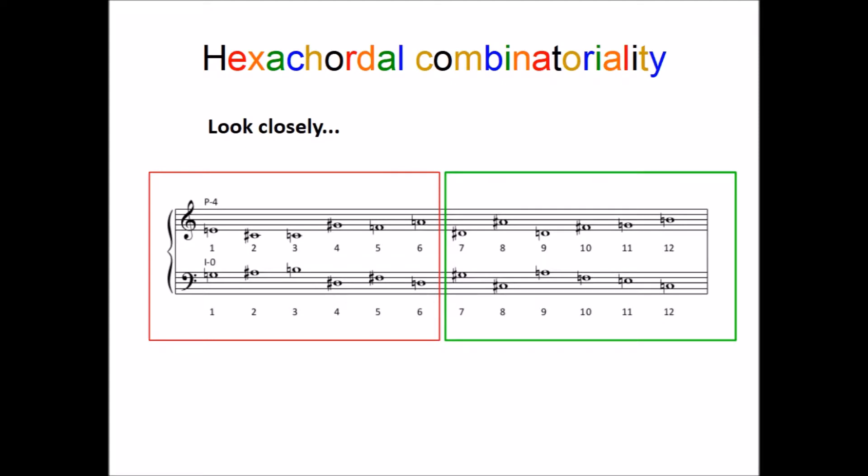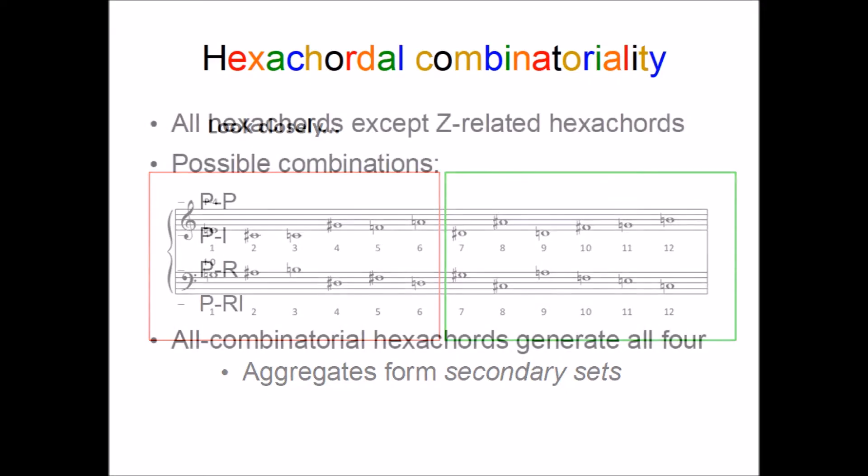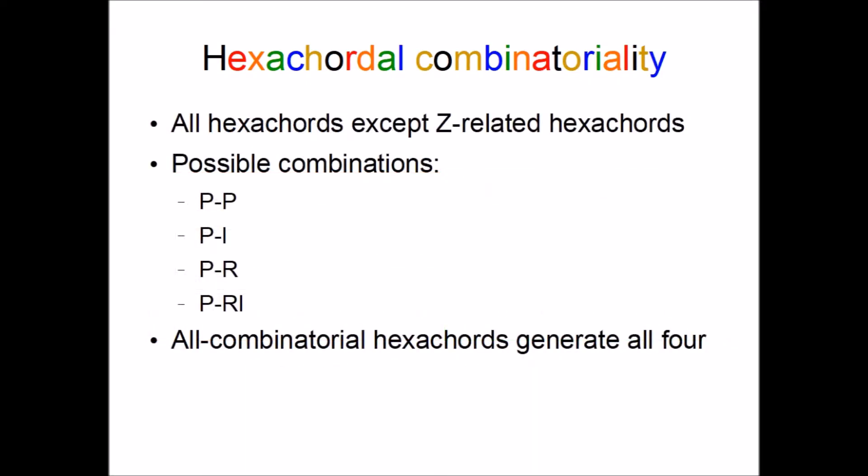Theorists call this compositional process hexachordal combinatoriality, and these aggregates are sometimes called secondary sets. Hexachordal combinatoriality is actually possible with any hexachord that serves as its own complement, which are all the hexachords besides those that are z-related.